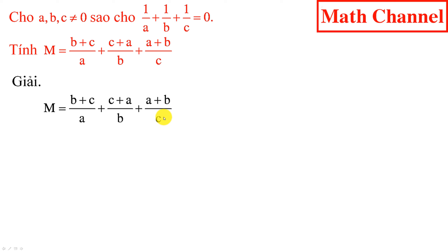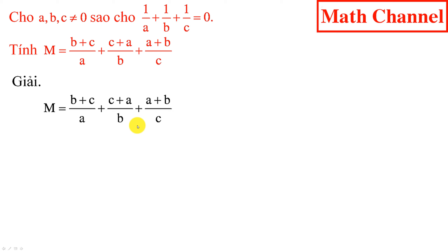Để sử dụng được giả thiết tổng nghịch đảo của 3 số A, B, C bằng 0, hay nói cách khác, 1 phần A cộng 1 phần B cộng 1 phần C bằng 0, ta nghĩ đến việc biến đổi cả 3 phân thức về cùng tử, hay nói cách khác, chúng ta sẽ quy đồng tử cả 3 phân thức của biểu thức M.